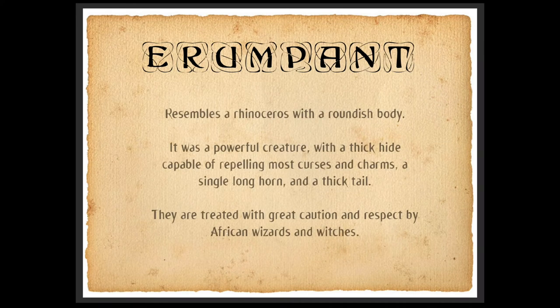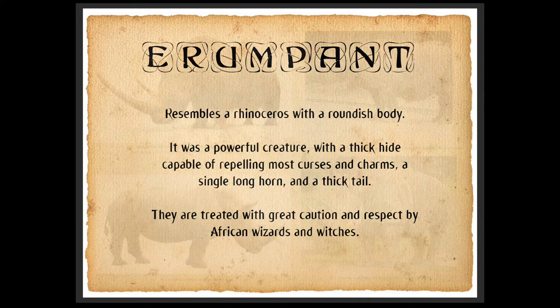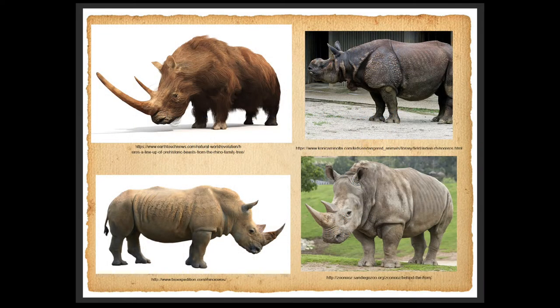The next character is definitely one of my favorites — the Erumpent. This is also one of my favorite names for the creatures. I love how J.K. Rowling can really make words feel so powerful and so magical. The Erumpent resembles a rhinoceros with a roundish body. It is a powerful creature with a thick hide capable of repelling most curses and charms, a single long horn, and a thick tail. They are treated with great caution and respected by African wizards and witches. When I saw the description, I almost immediately thought of a rhino unicorn — and if you've seen the movie, it pretty much is exactly that: a big rhino-looking creature with a horn on its head. So for the reference, I'm going to take similar images to that — that rhino-like shape and face and armor to take inspiration from.